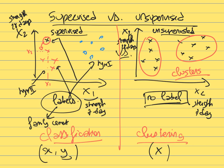In practice, unsupervised machine learning is less used than supervised machine learning because there has been much more progress in supervised ML over the past decades. Unsupervised ML is more challenging: you don't know the output, so it's harder to find structure when you don't know what you're looking for. That said, it is also potentially more rewarding long-term because it is closer to how humans actually learn.